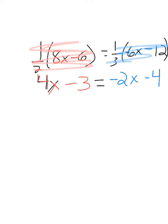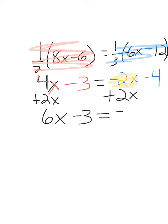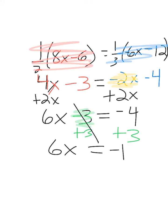Once again, I'll look for like terms — I don't have any. So I will move my variable term from the right. I'm going to move negative 2x; since it's negative, I will add 2x to each side. So I have 6x minus 3 equals negative 4. And now we're back to a two-step equation. So I'm going to move my constant of negative 3 — since it's negative, I will add 3. So I have 6x equals negative 1. Now finally I'll divide both sides by 6, and I end up with x equals negative 1 sixth.